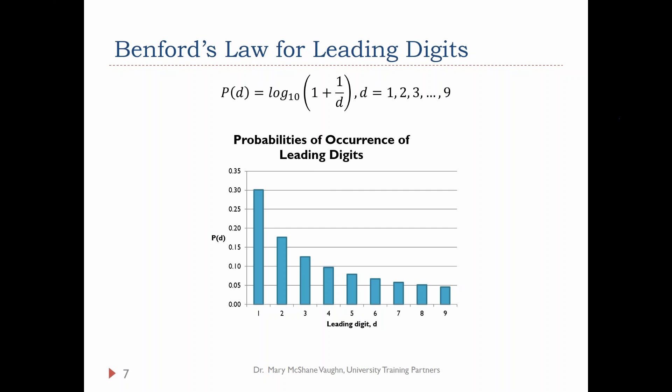Here is a comparison of the Benford distribution in blue versus the uniform distribution. If you use a uniform distribution, you're going to undercount the data starting with 1 — you won't have enough 1s, 2s, 3s, and 4s — and then you're going to have too many numbers that start with 5, 6, 7, 8, and certainly 9. So we can compare the leading digits of our data set to what we would expect based on the Benford distribution to detect fraud.